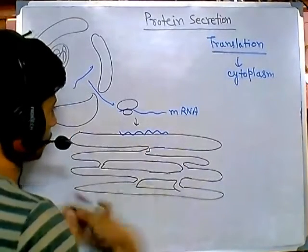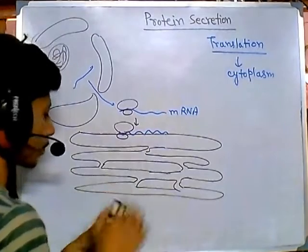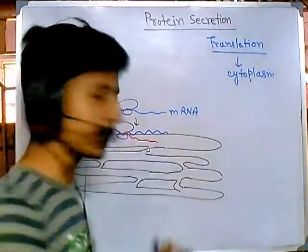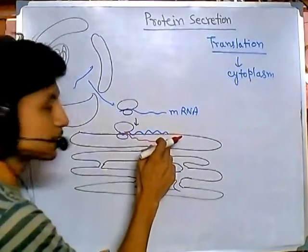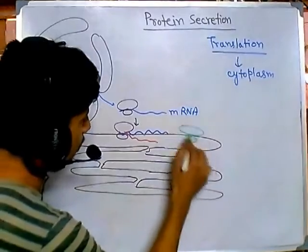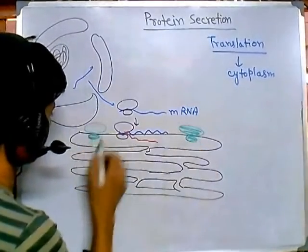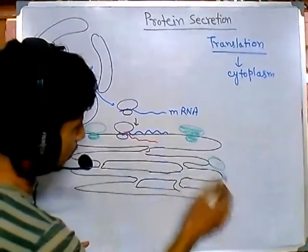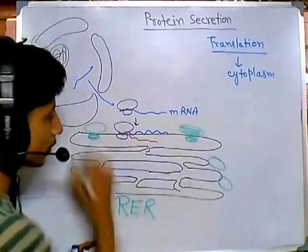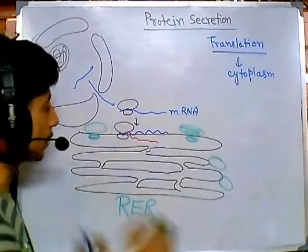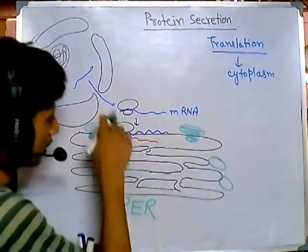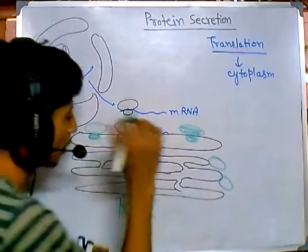The rough endoplasmic reticulum has internal channels. Protein synthesis begins here because mRNA sits on this place, ribosomes sit here, and proteins are being translated. Once the proteins are made, they are inserted inside the endoplasmic reticulum. The endoplasmic reticulum is filled with ribosomes throughout — that's why we call it rough endoplasmic reticulum, or RER, because the surface is rough due to the presence of ribosomes, which are granular things.